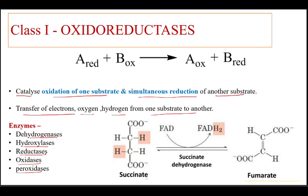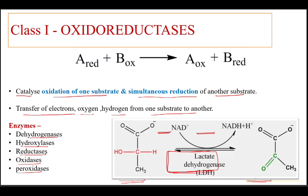An example is where succinate is converted to fumarate. The enzyme involved in this reaction is succinate dehydrogenase, and FAD is reduced to FADH2. So there is simultaneous reduction of FAD and oxidation of succinate to fumarate, catalyzed by succinate dehydrogenase, which is classified under oxidoreductase.